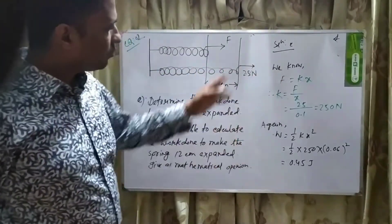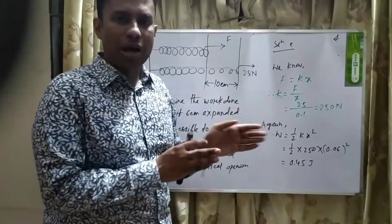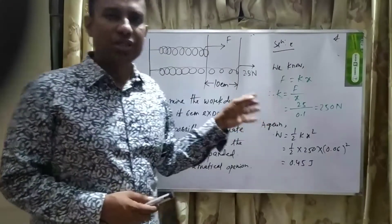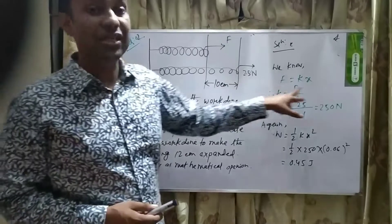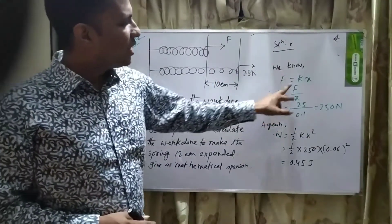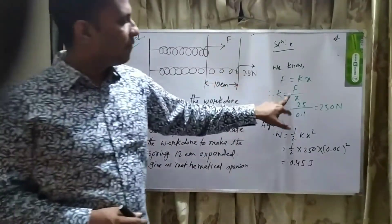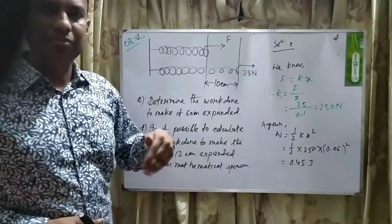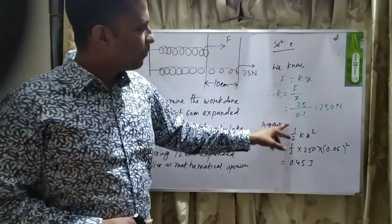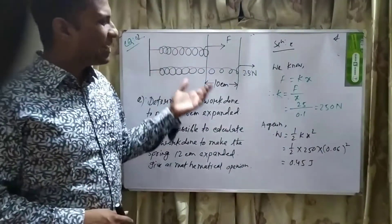Let's go with the equation. The work done equation is half KX squared. First, we must determine the spring constant K using F equals KX, so K equals F divided by X. The value of F is 25 N, and X is 10 cm, which equals 0.1 meters. Doing the math, we get K equals 250 N/m.